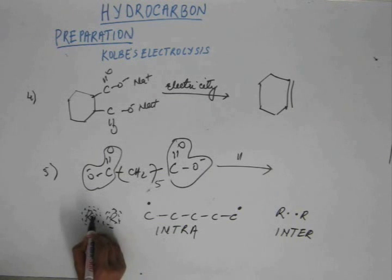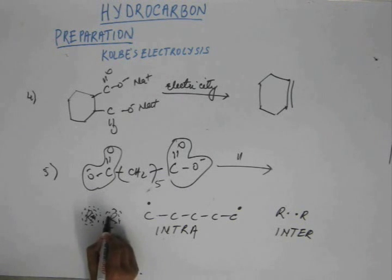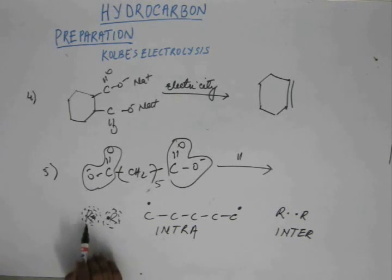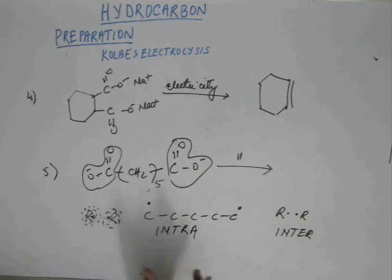Electrons from this R-dot will enter into the orbital of this R-dot and vice versa. That electronic transition will not be very easy and simple because the electron has to pass through the cage of the solvent surrounding the molecule. And that electronic transition will be very slow. And the whole process of bond formation will be very slow. So this dimerization with the ease with which we write doesn't take place with the same ease. The process is very slow.